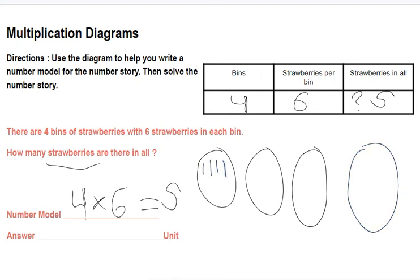One, two, three, four, five, six. Seven, eight, nine, 10, 11, 12, 13, 14, 15, 16, 17, 18, 19, 20, 21, 22, 23, 24.